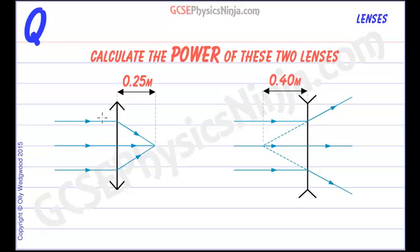The rays of light that are coming in parallel to the principal axis, that's the line through the center, are being converged to a focus and the focal length is 0.25 meters.